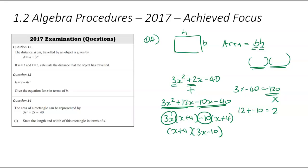I now just want to state the sides. So answering the question, what are the length and the width of this rectangle? Length and width of rectangle is x plus 4 and 3x minus 10. And that wraps up my question. I hope you've found this video useful. Let's have a look at the other achieved focus questions.